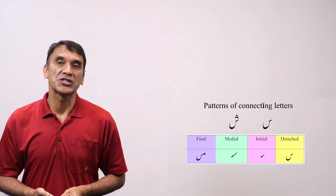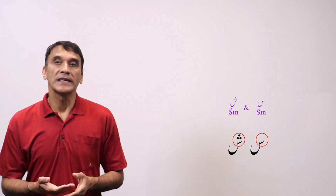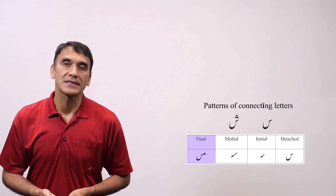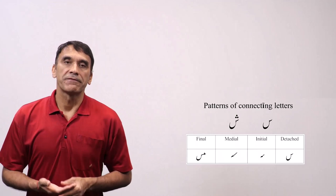Here in this table we have given these forms only with seen, but both seen and sheen behave the same. The only difference is the nuptas, the dots. Only this part of the letter and the nuptas are used when it comes in initial and medial form. The detached and final form are more or less the same except the final form is attached to the previous letter.